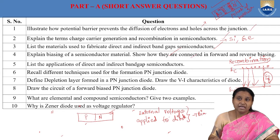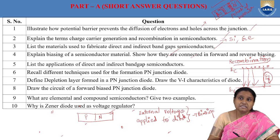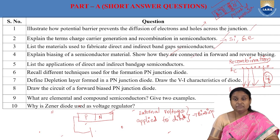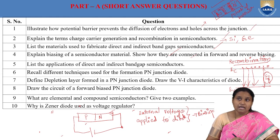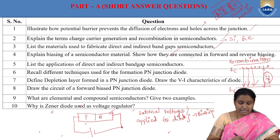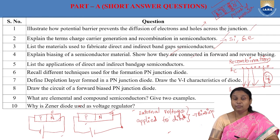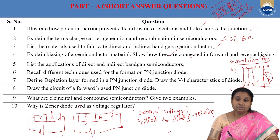The first type of biasing is forward biasing, where the p-type of the PN junction is connected to the positive terminal of the battery and the n-type is connected to the negative terminal. In reverse biasing, it is completely opposite — p-type is connected to the negative terminal and n-type is connected to the positive terminal. When the PN junction diode is forward biased it acts as a conductor; when reverse biased it acts as an insulator.